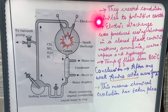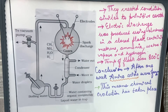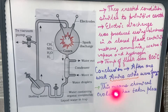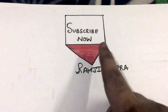After one week, Urey and Miller observed the formation of amino acids in the flask. This proved that chemical evolution occurs and that chemical evolution leads to the formation of new life.